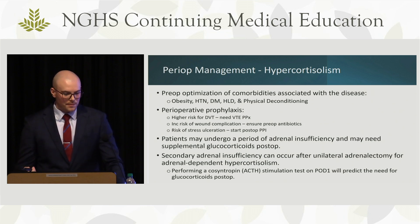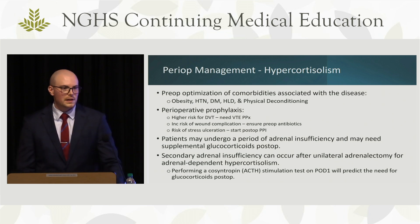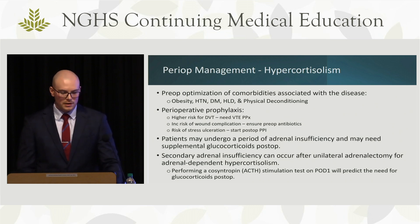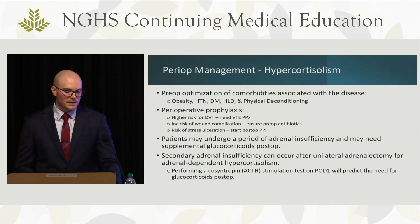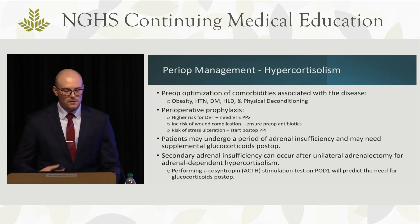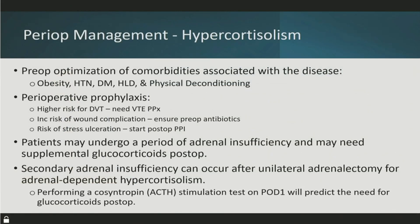For hypercortisolism pre-op optimization: address metabolic effects — obesity, hypertension, diabetes, hyperlipidemia, and proximal muscle wasting. Get patients on an exercise regimen, control their diabetes, and ensure they're safe for surgery. Pre-operatively, they are at higher risk for DVTs, so start prophylaxis; watch for increased wound complications due to diabetes; give preoperative antibiotics; and consider PPIs post-op for stress ulceration. After removing the lesion, quite a few patients will have adrenal insufficiency requiring supplemental glucocorticoids. An ACTH stimulation test on post-op day one can predict the need for steroid supplementation.